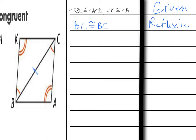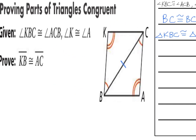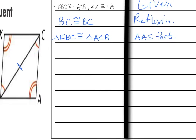Now, as you look at the marked shape, I have enough information because I've got angle-angle-side on the bottom triangle and angle-angle-side on the top triangle. So I can say that my triangles are congruent. Triangle KBC is congruent to triangle ACB by the angle-angle-side postulate. Is that my final answer? No, because they want you to prove that KB and AC are congruent to each other. I've shown that the triangles are congruent, so I can now say any corresponding side or angle is congruent by corresponding parts of congruent triangles are congruent.